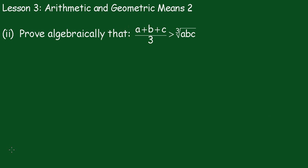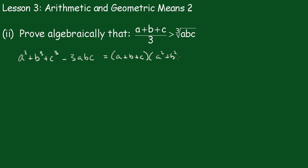Now we have to prove algebraically that (a + b + c) / 3 is greater than the cube root of abc. This is quite a difficult proof and there are several parts to it. The first part is to prove that a³ + b³ + c³ − 3abc equals (a + b + c)(a² + b² + c² − ab − bc − ac). You can pause the video and have a go at expanding it out and proving that result.